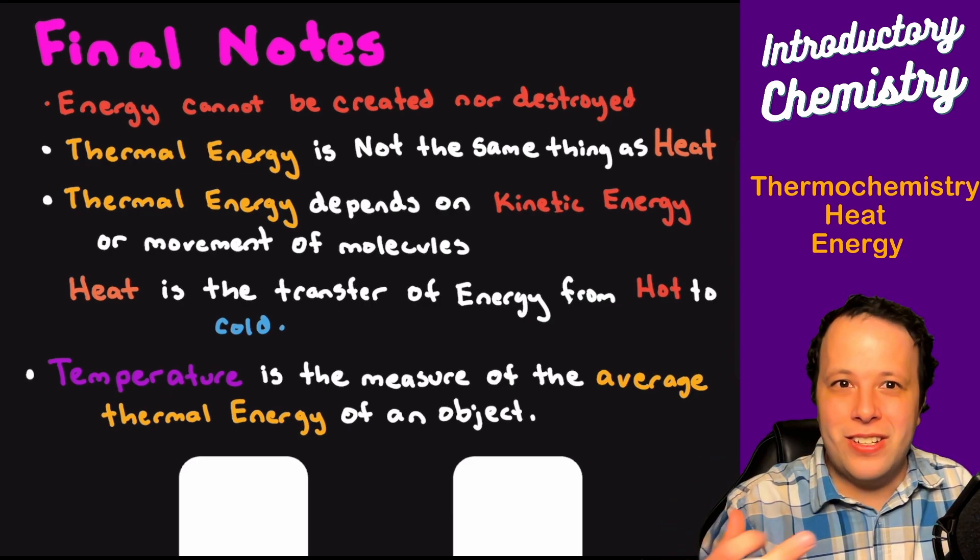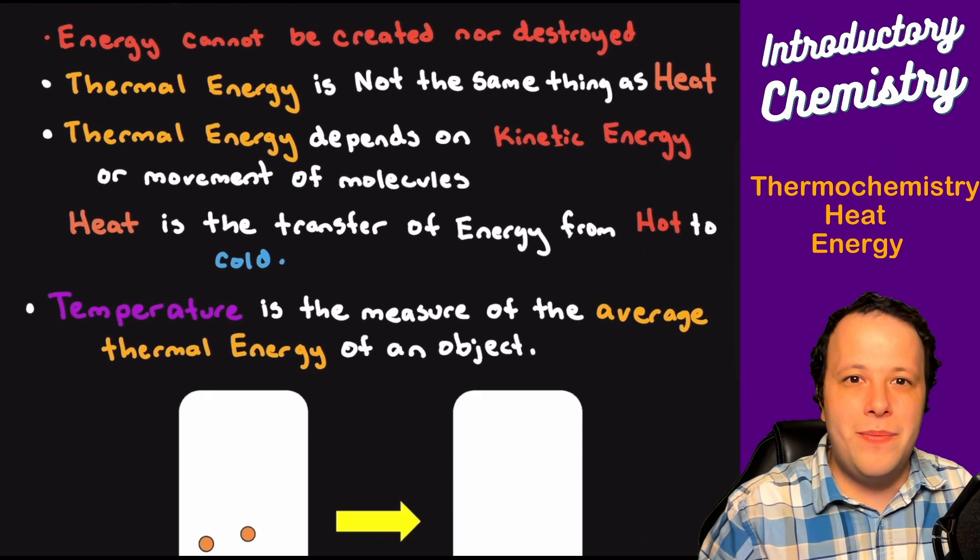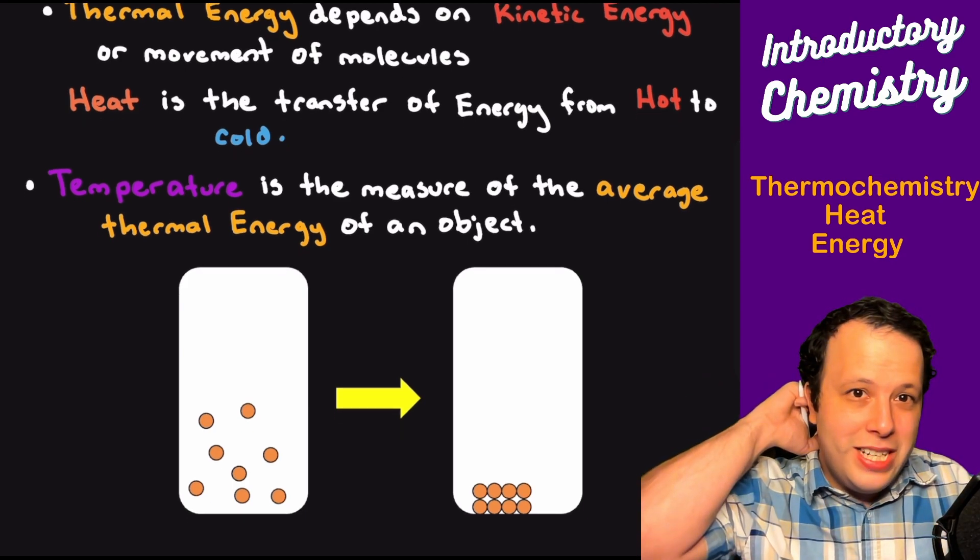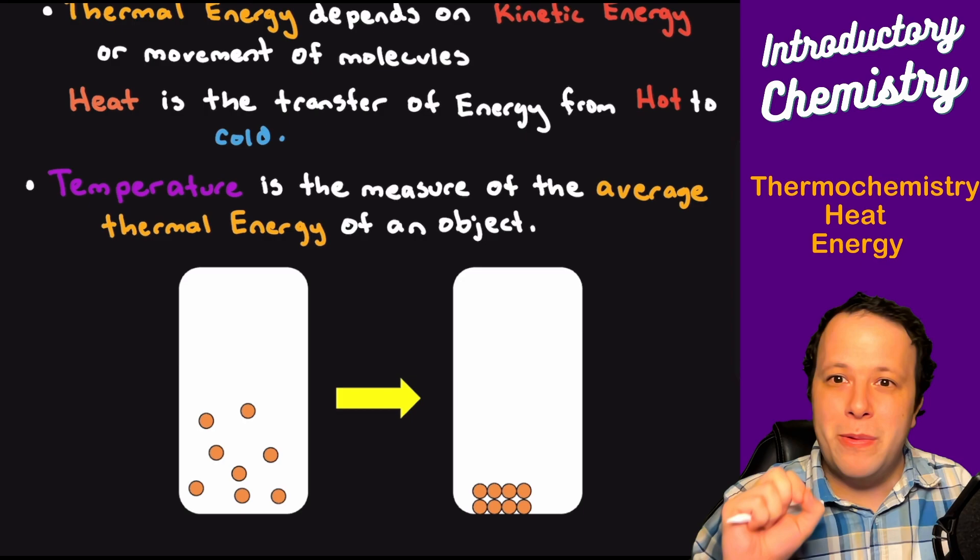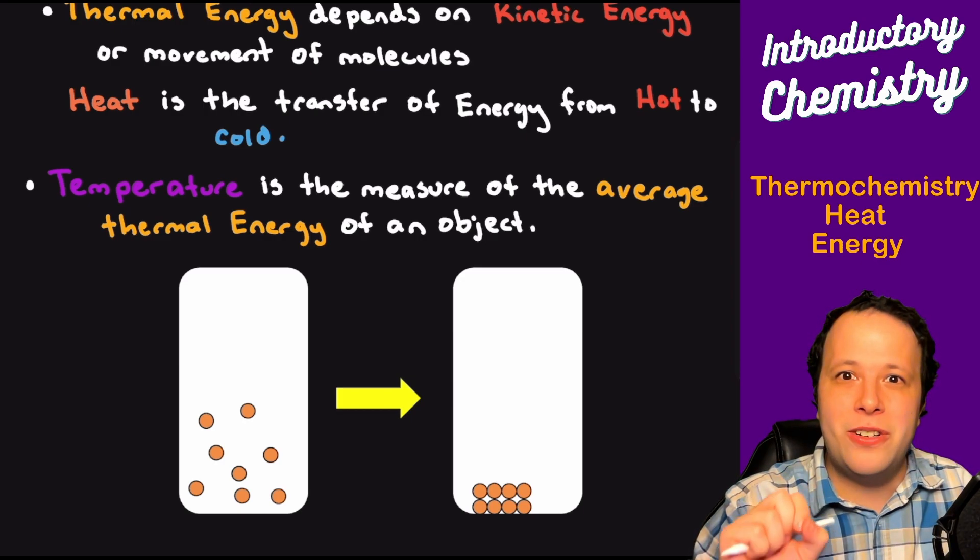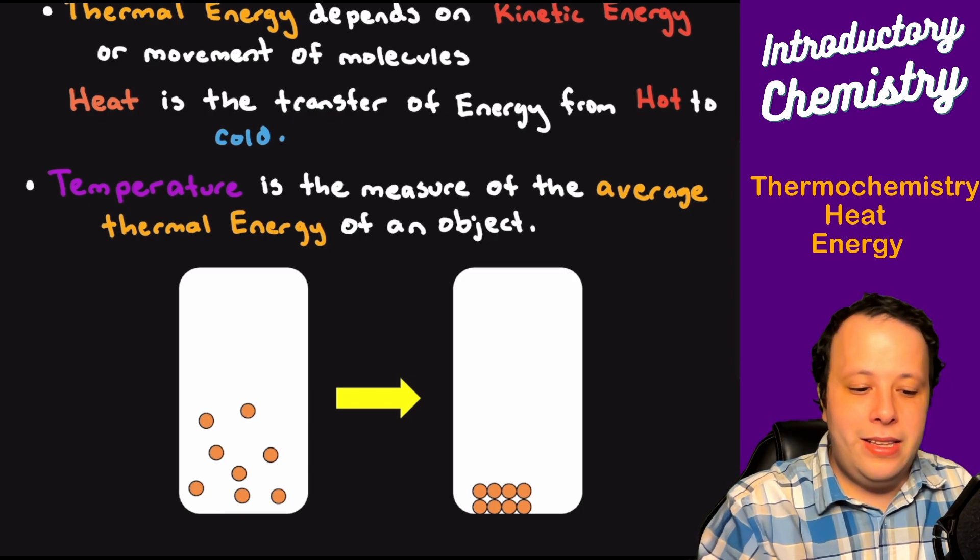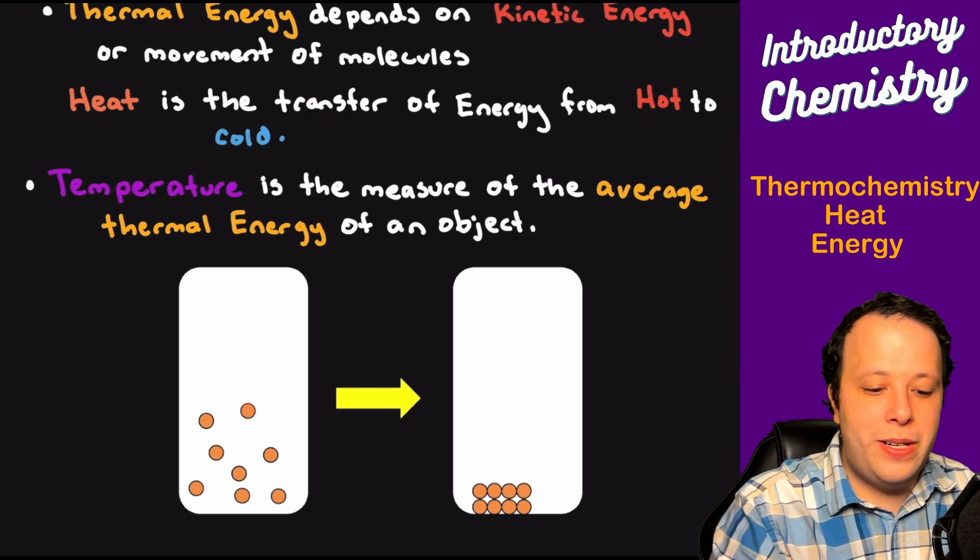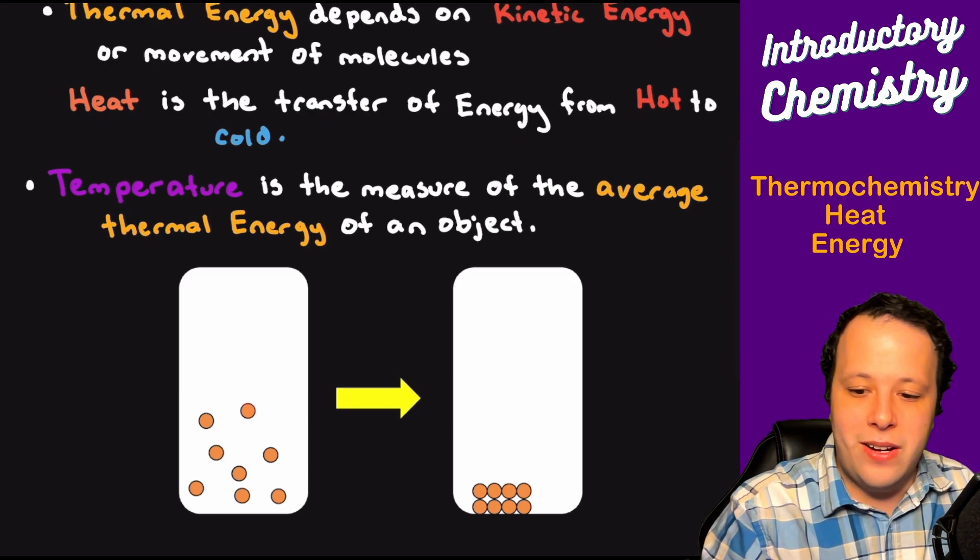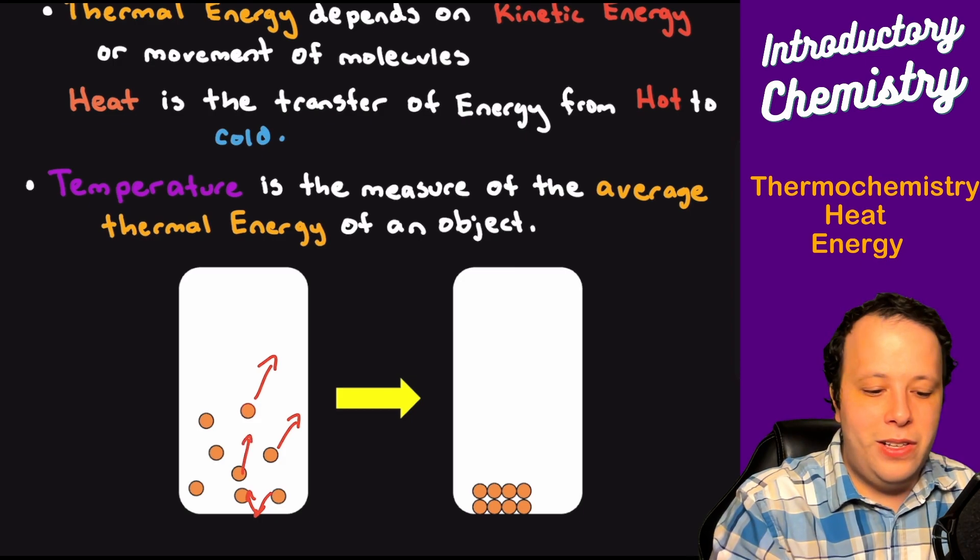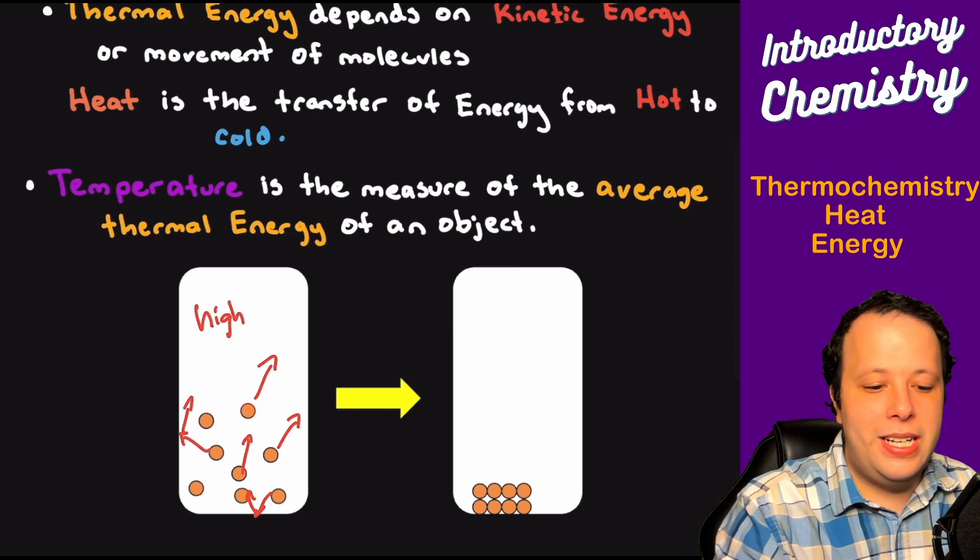When we use temperature, it's the measure of the average thermal energy of an object. Remember from my temperature videos, if a molecule is very hot, it's moving around all over the place. These molecules are bouncing into the walls, moving all over. This means it has very high kinetic energy.